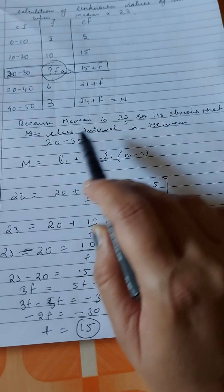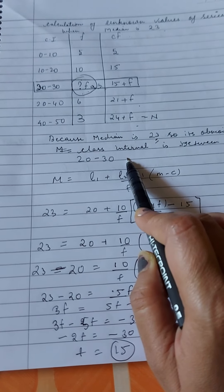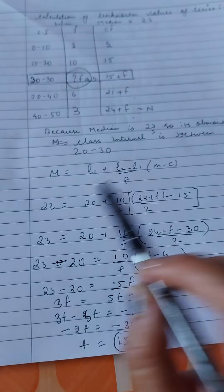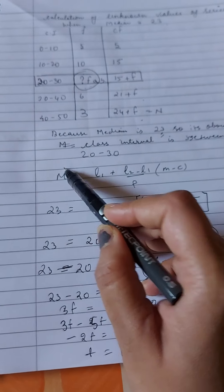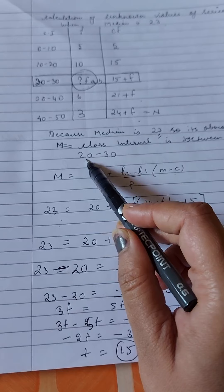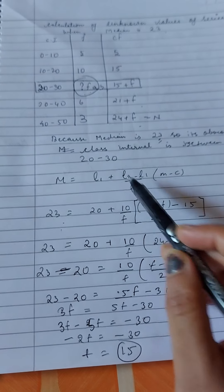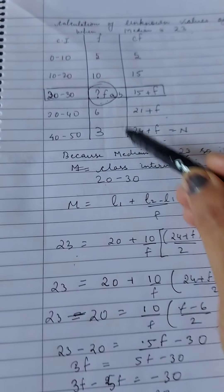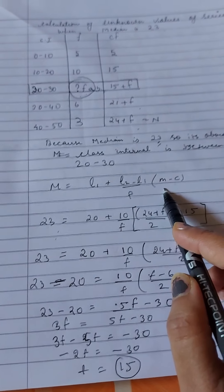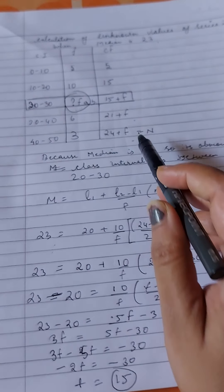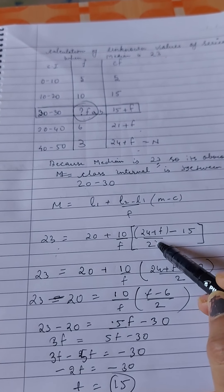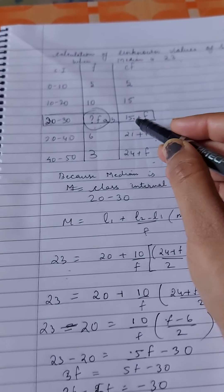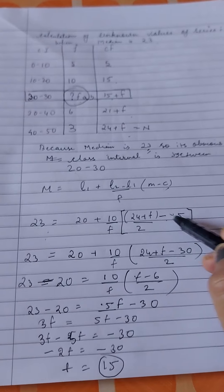Since median 23 is given, and we know that the class interval will be between 20 to 30. So when we put in the formula, in place of median we'll write 23. Lower limit is 20. And between 20 to 30, the difference is 10. Our frequency is f. Since we have to find frequency, this is f. M minus c, M is (24 plus f) by 2, minus cumulative frequency which is 15, just above 15 plus f, which is 15.